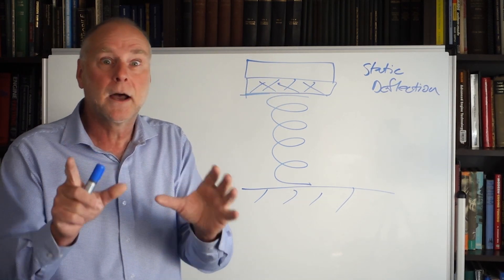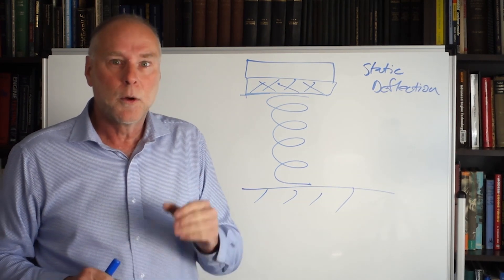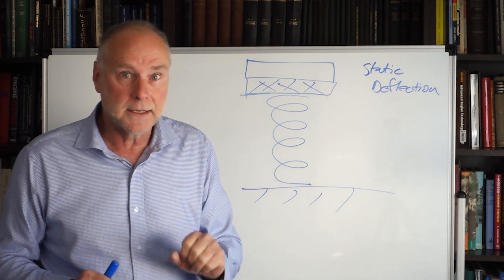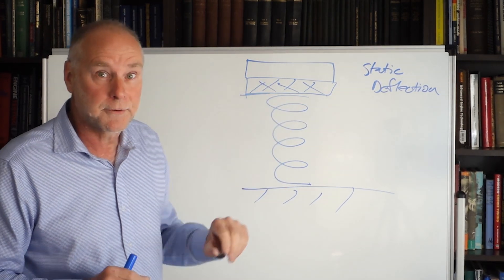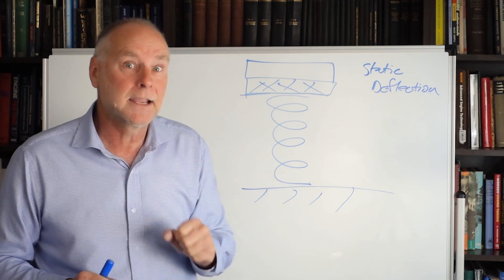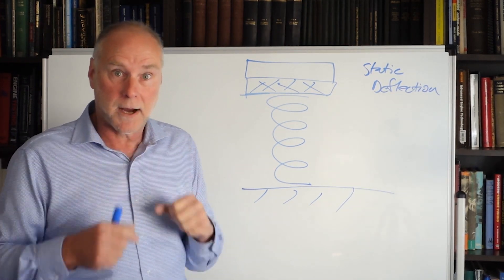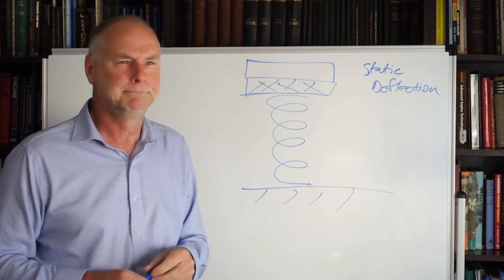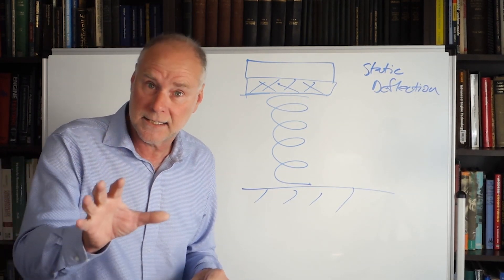So if we go to a car and we measure its natural frequency, we're not only taking into account the stiffness of the spring, we're also taking into account the amount of weight that's working through that spring, and that is taking into account what is called the motion ratio, the leverage that the suspension arm has got over the spring. All getting a bit complicated. Let's take a step back.